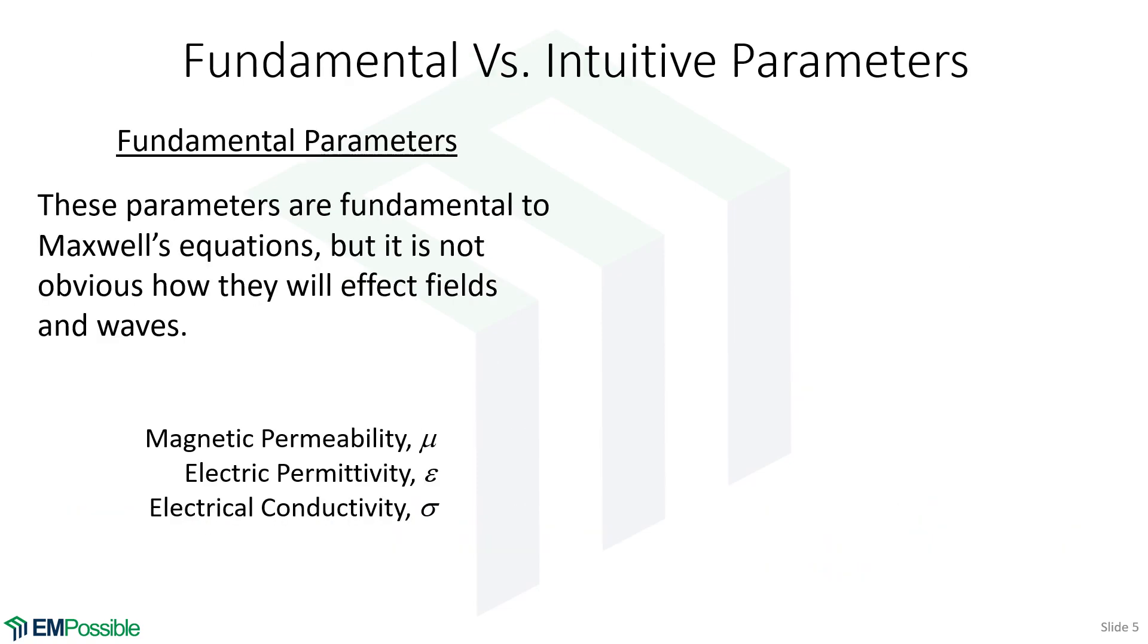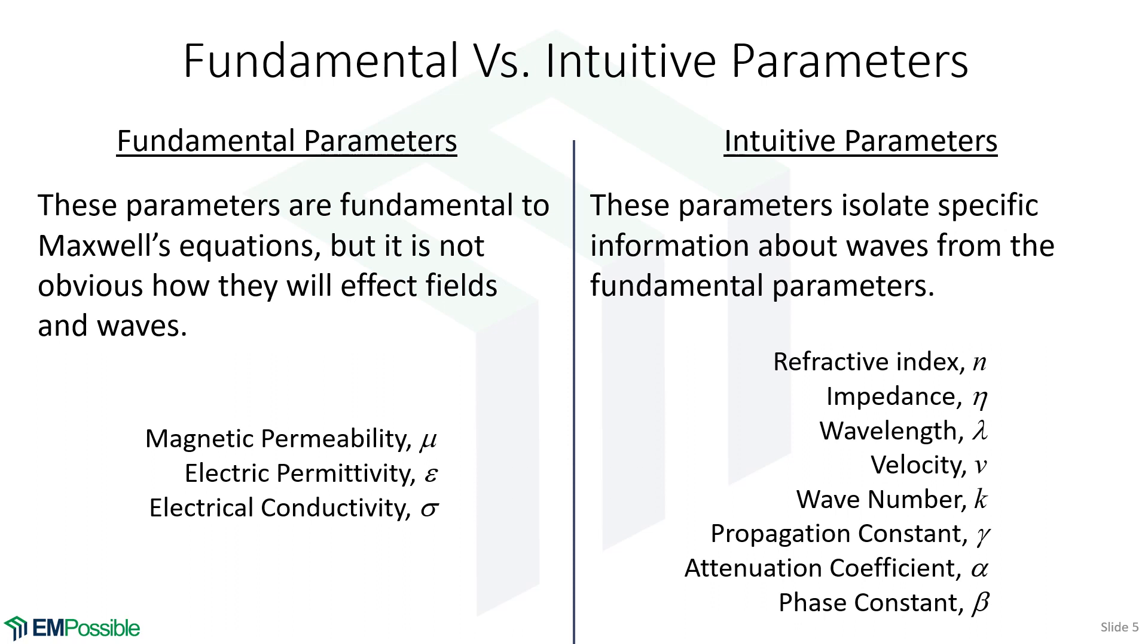So I already discussed the fundamental parameters. Intuitive parameters, there's a gazillion of these. It really just depends on what you're doing. But refractive index, this is going to tell us about the speed of the wave and the wavelength. We have the impedance. That's really the balance in the amplitude between E and H and the phase between E and H. Wavelength, velocity, wave number, propagation constant, attenuation coefficient, telling you how quickly a wave is decaying. Phase constant, how quickly it's oscillating. So those are some examples of the intuitive parameters.